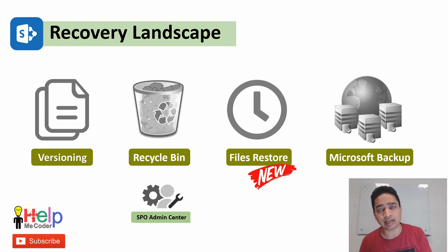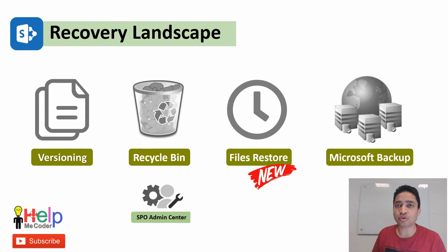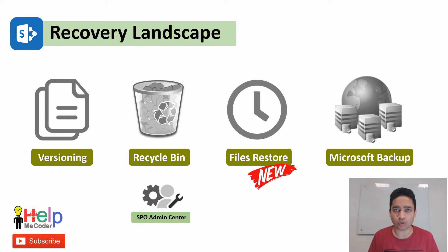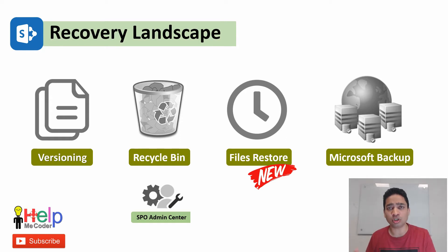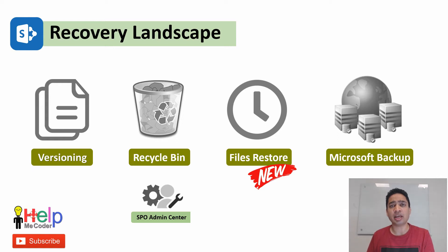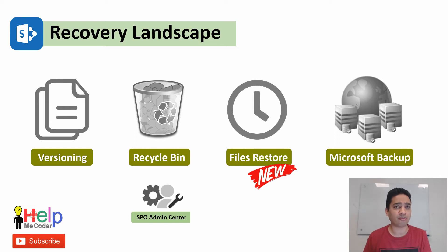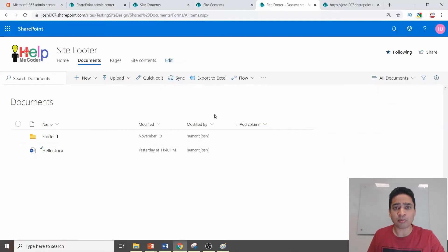Let's start with versioning first. Versioning helps you create multiple copies of the same file. If you are working or collaborating with many people, or even working alone on the same file, any change you make and save creates a new version. You have to define how many versions you want to keep and enable versioning on that particular library. On a granular level, if any content change or edit was made that you don't like, you can use a previous version to restore your existing content.